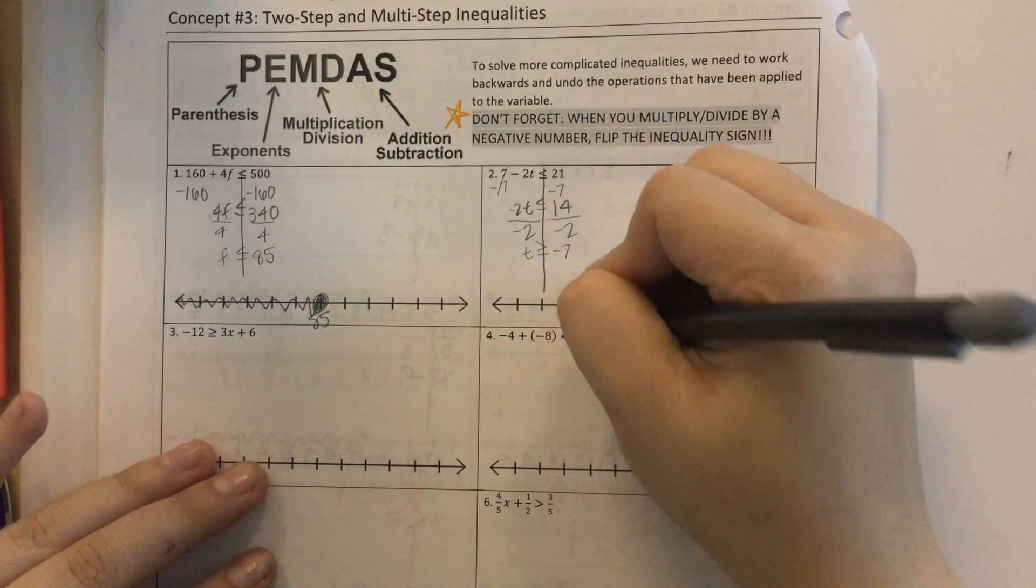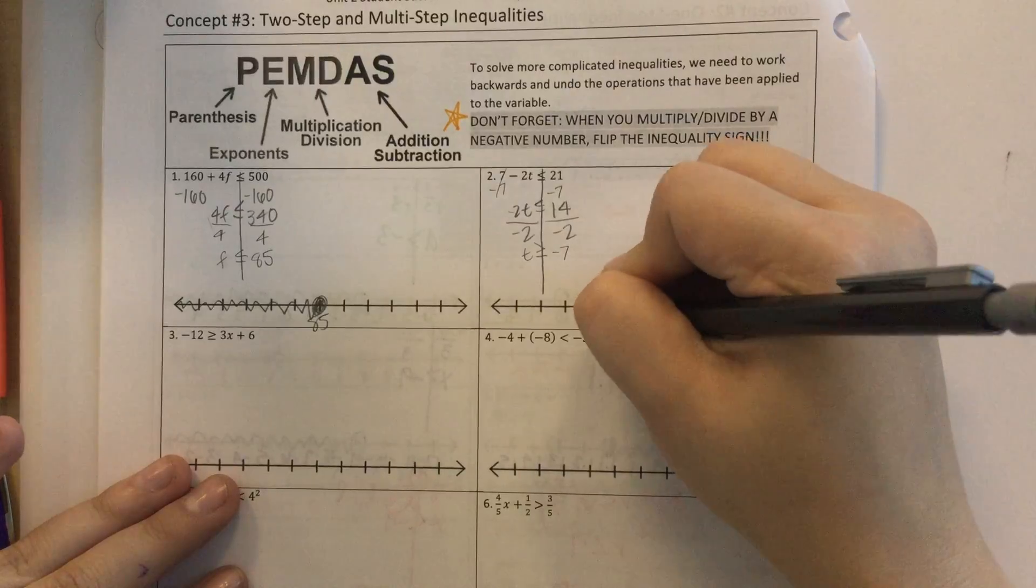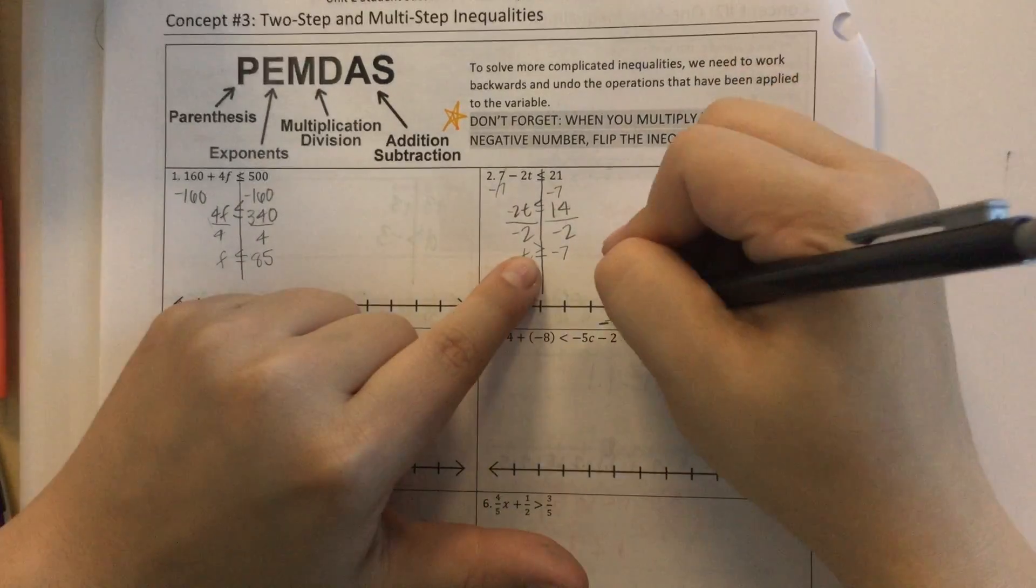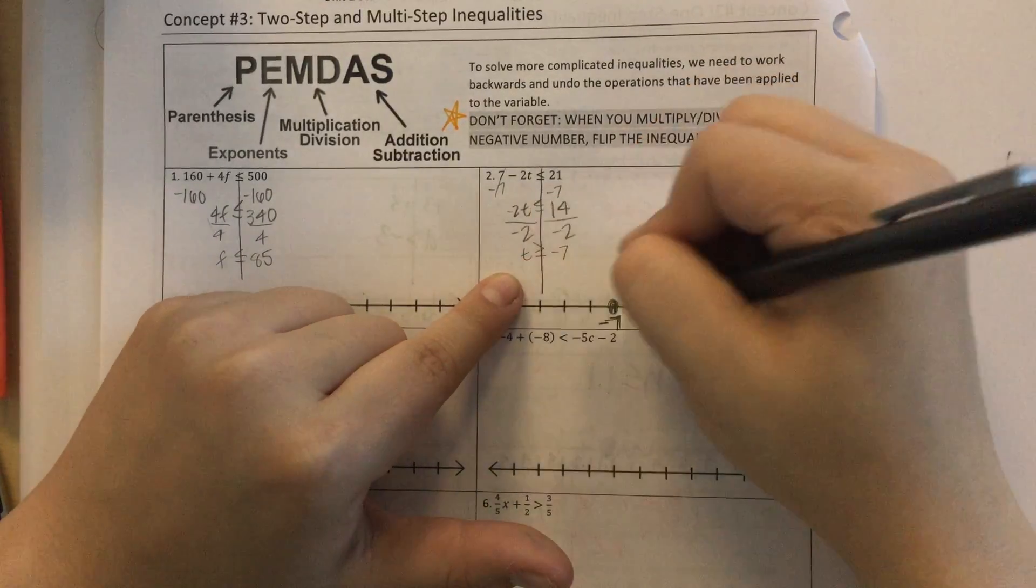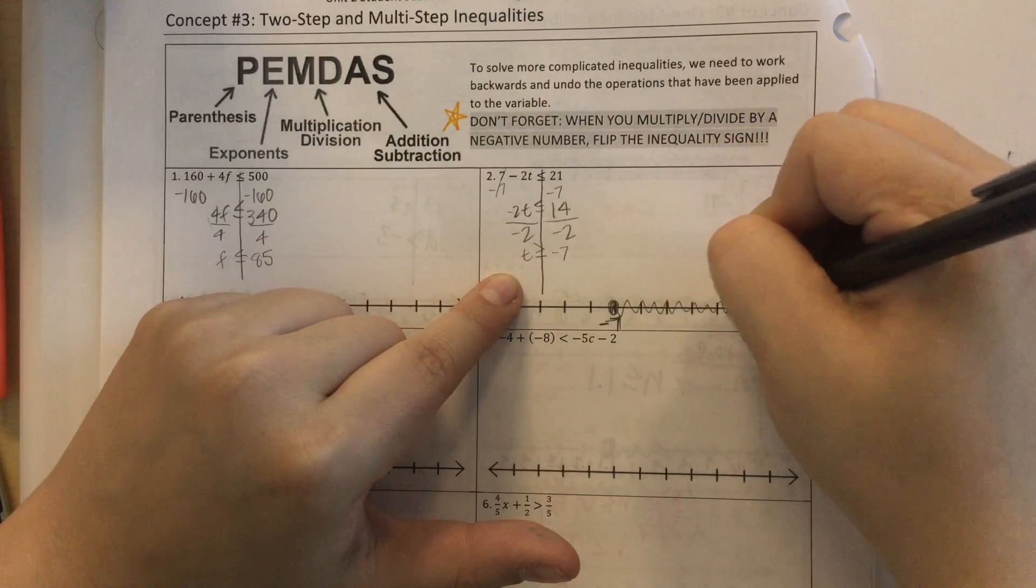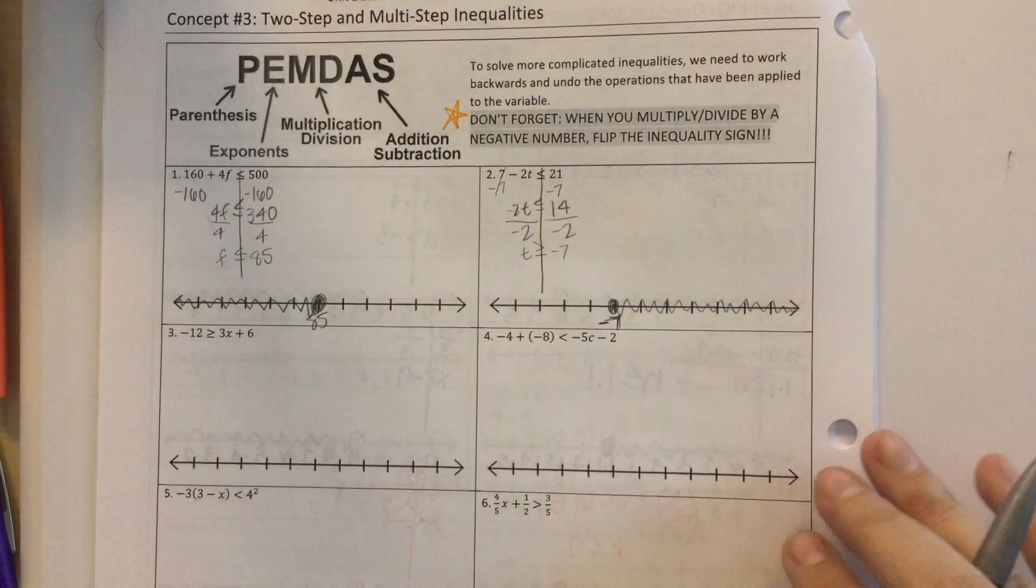So I'm going to put a negative 7 anywhere on there, it doesn't really matter where. Closed circle, going to the right. And that's it.